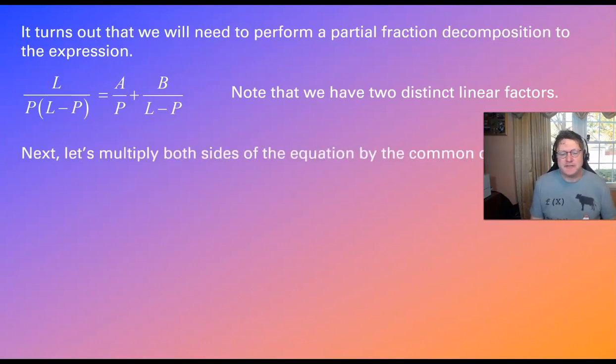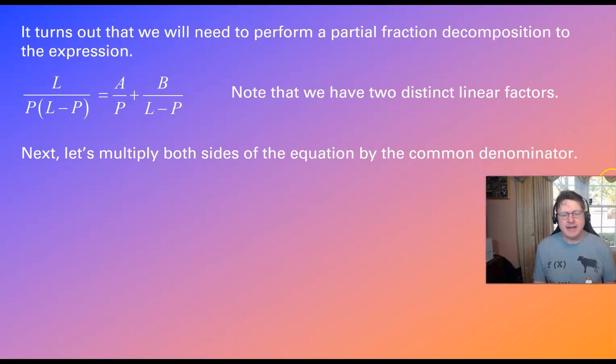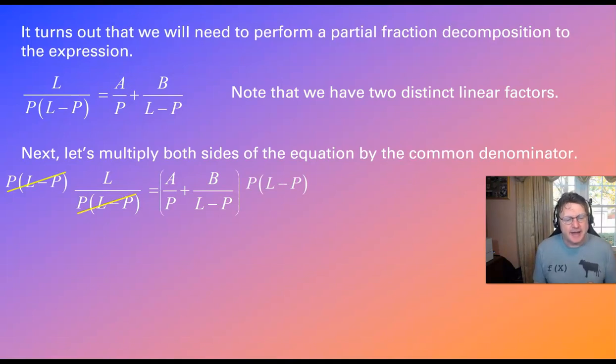So we've got the two distinct linear factors. What does that mean? Well, we're going to go ahead and multiply both sides of the equation by a common denominator, which is clearly going to be the P times (L minus P). And so when we make that happen, we see a couple of things. We see the left side (L minus P) is canceling away completely. And the P is canceling away completely, with L being the only thing that's left. So we really cleaned up the left side pretty nicely. Now, if we look at the right side, we kind of distribute the P(L minus P) in to see some P's cancel initially, leaving you with A(L minus P), and then distribute one more time there. (L minus P)'s cancel and we have B times P.